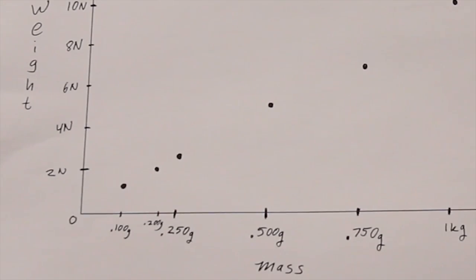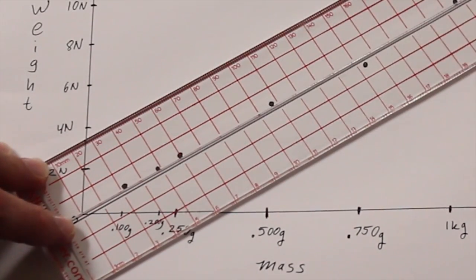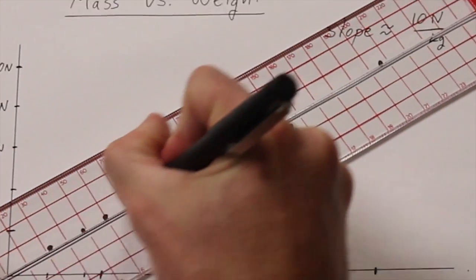A proper best-fit line will have the same amount of points above the line as below the line. This is not a lesson that's easily learned by graphing with Excel.